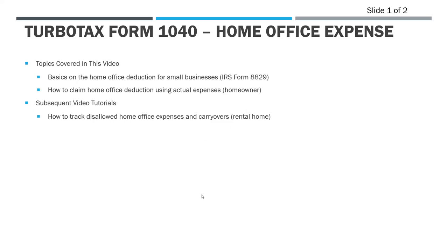For this video we are continuing with our home office deduction for self-employed taxpayers in TurboTax. In the previous videos we covered scenarios where we had a home office deduction for a tenant — if you're renting a property, what expenses can you deduct and what does that look like on the 8829. We also looked at the simplified method. Now for this video we want to look at how to complete the 8829 using actual expenses in a scenario where we are the homeowner. There are significant differences because we're deducting things like mortgage interest and property taxes, and we can claim depreciation expense on the home — something a tenant cannot do.